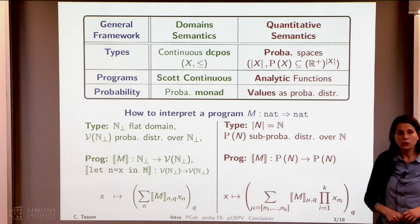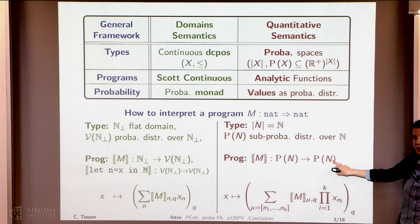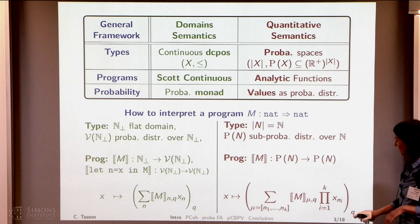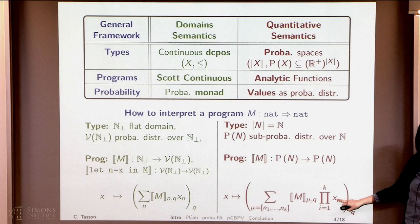To interpret programs, I will use analytic functions. The semantics of a program will be a function from the probabilistic space of the inputs to the probabilistic space of the outputs. We are in a quantitative setting, meaning we take care of resources. To compute q, I will have to use k times my input — m will call its input k times. That means I will sample my random variable k times and get n1, n2, and so on as outcomes, with probability equal to the product of the probabilities of getting each outcome.